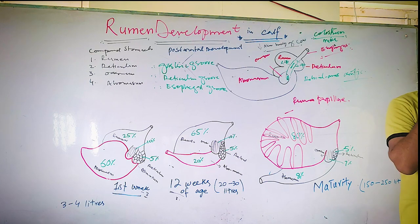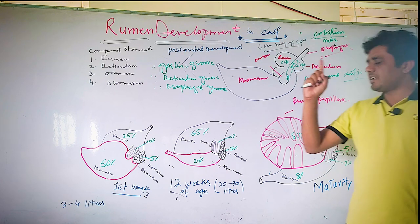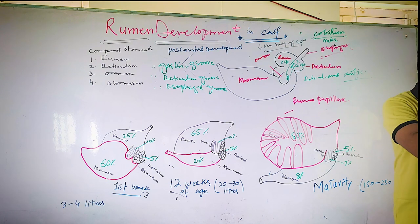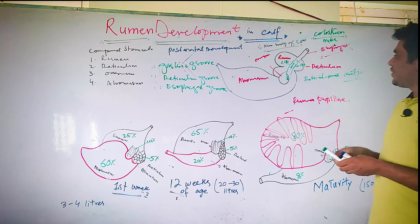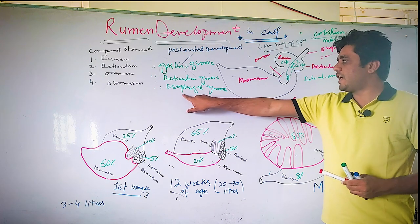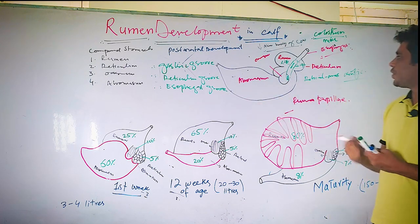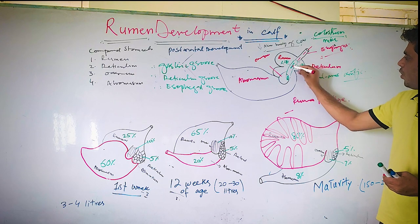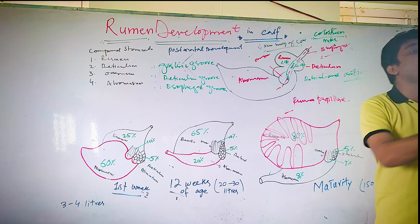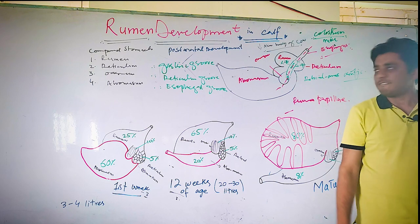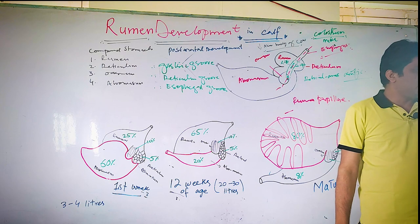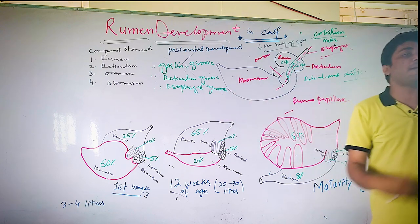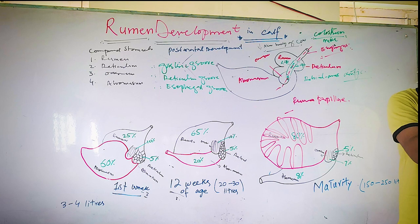On the first day, the liquid food — which is the colostrum or milk — given to the calf, with the help of this esophageal groove or that tube, will directly go into the abomasum. It will bypass the rumen, reticulum, and omasum. That's why the esophageal groove is also called a bypass for the milk.